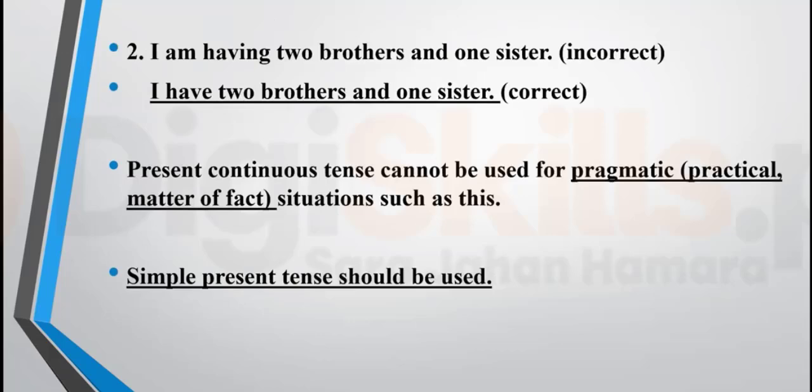The structure 'I am having two brothers and one sister' is incorrect. If somebody asks how many brothers and sisters you have, you say 'I have two brothers and one sister,' because this is a universal truth — a matter of fact. It is a practical truth, so you do not use present continuous tense. You use simple present tense.